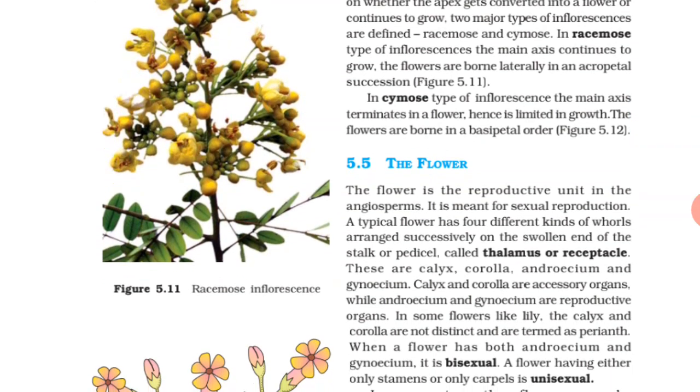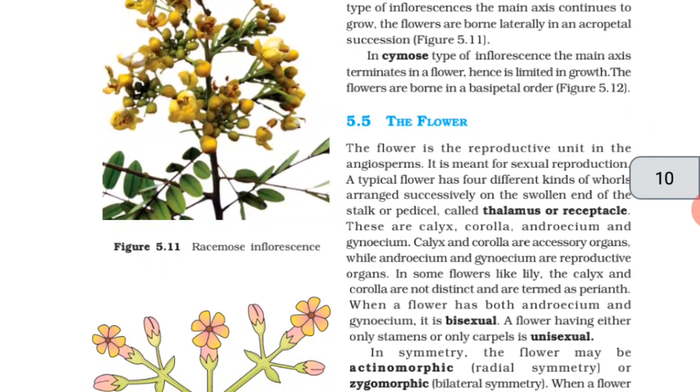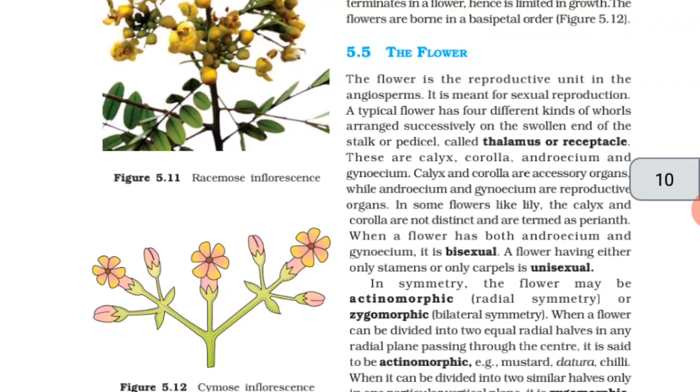In some flowers like lily, the calyx and corolla are not distinct and are termed as perianth. When a flower has both androecium and gynoecium, it is bisexual. A flower having either only stamens or only carpels is unisexual.